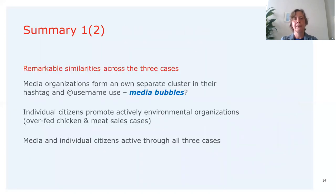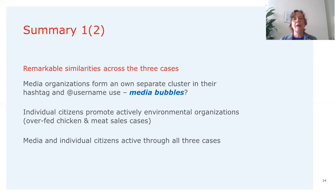Summarizing, what is remarkable is the structural similarities across the three cases. Media organizations seem to use Twitter to refer to each other, forming a separate cluster in their hashtag and username use — a sort of media bubble. That's interesting for communication sciences to study further: is this typical of food crisis debates on Twitter or broader? Another similarity is that individual citizens seem to promote environmental organizations — citizens were also retweeting tweets originating from animal welfare organizations in the overfed chicken and meat sales cases.